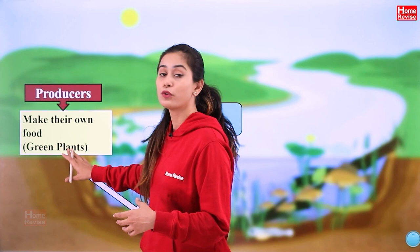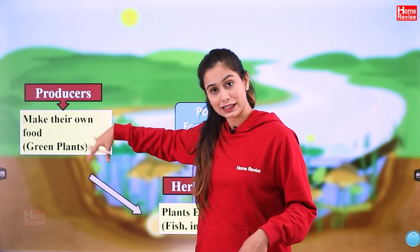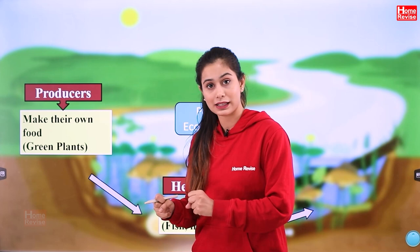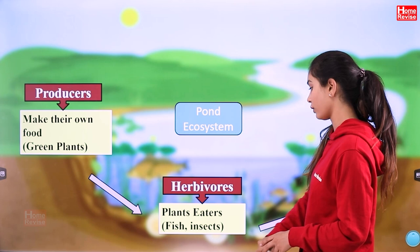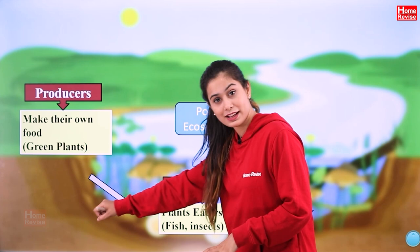Then the organisms that eat these plants are called herbivores — plant eaters. Some fish will be herbivores, and some insects are the ones who eat the plants in the water.